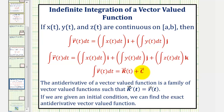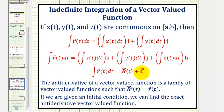This constant vector c comes from the constant of integration from the x, y, and z components. So the anti-derivative of a vector-valued function is a family of vector-valued functions such that the derivative of big R of t equals little r of t. If we find the derivative of big R of t plus c, it gives us little r of t, and the derivative of the constant vector c would be the zero vector.